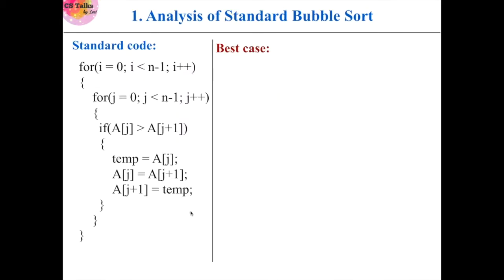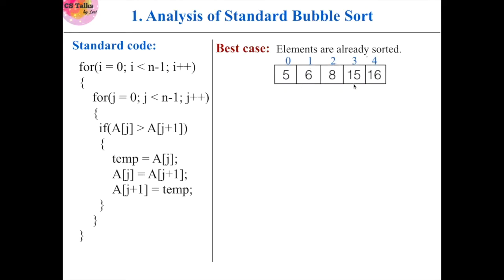This is the code snippet for standard bubble sort, and we will use it for our analysis. The best case occurs when the input array is already sorted, meaning elements are in the correct order and no swapping is needed. The outer loop handles passes and the inner loop handles comparisons. We do n-1 passes and in each pass we do n-1 comparisons.